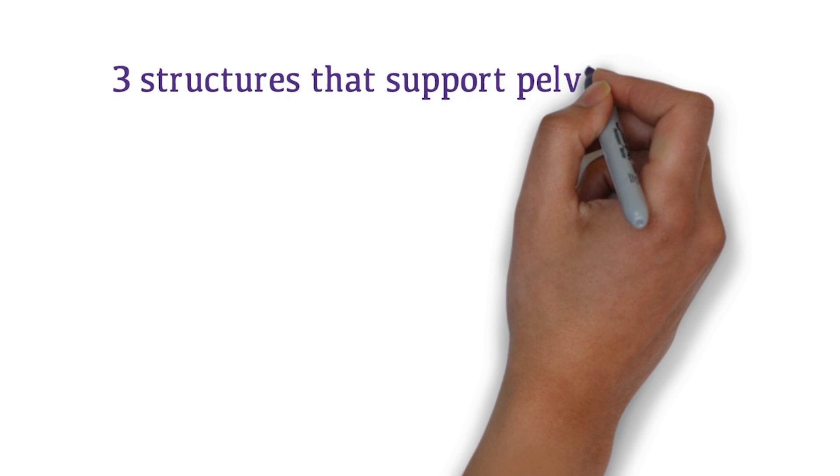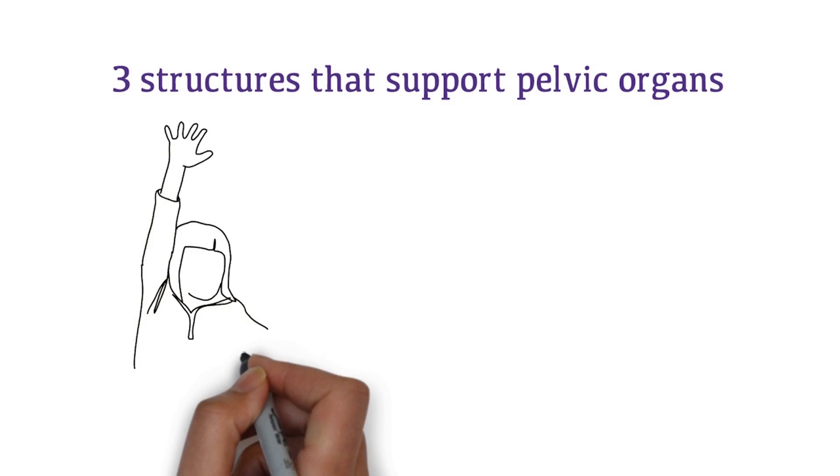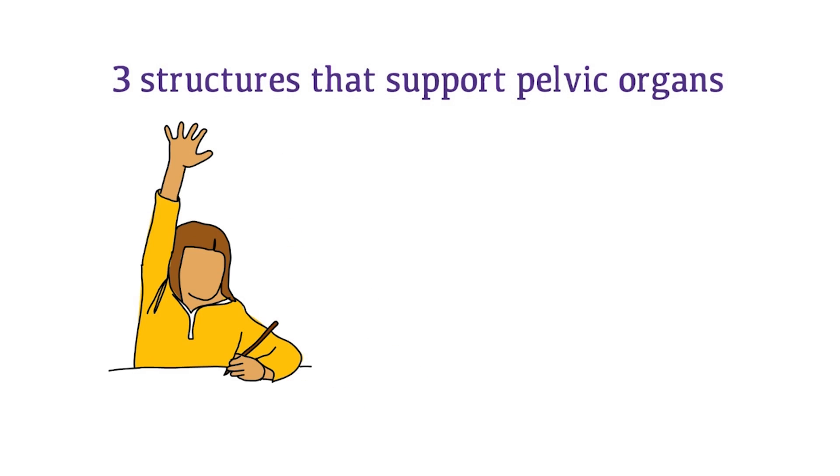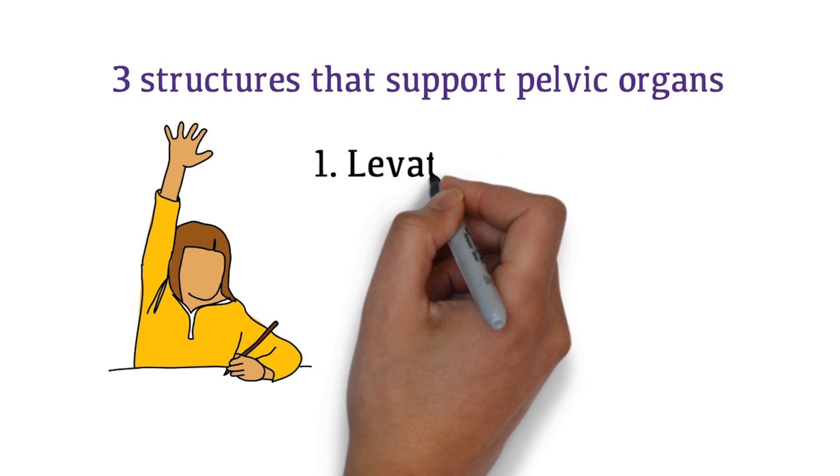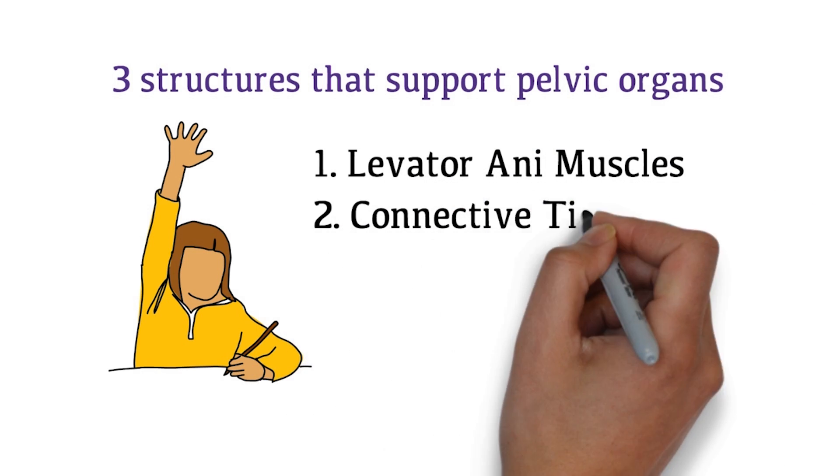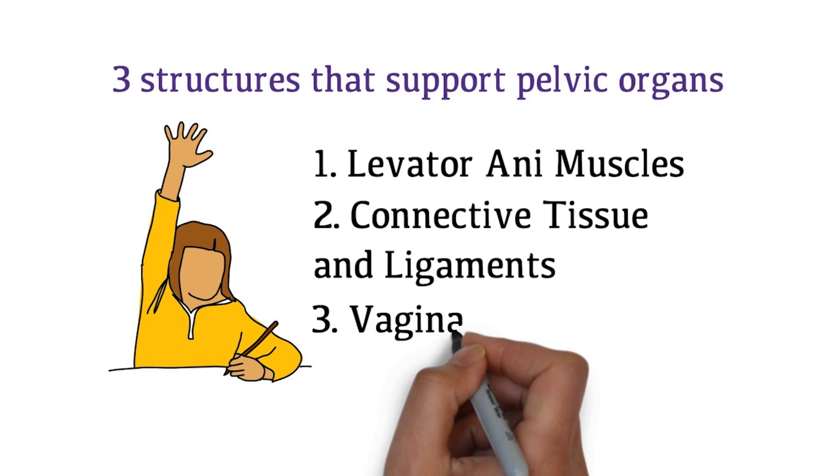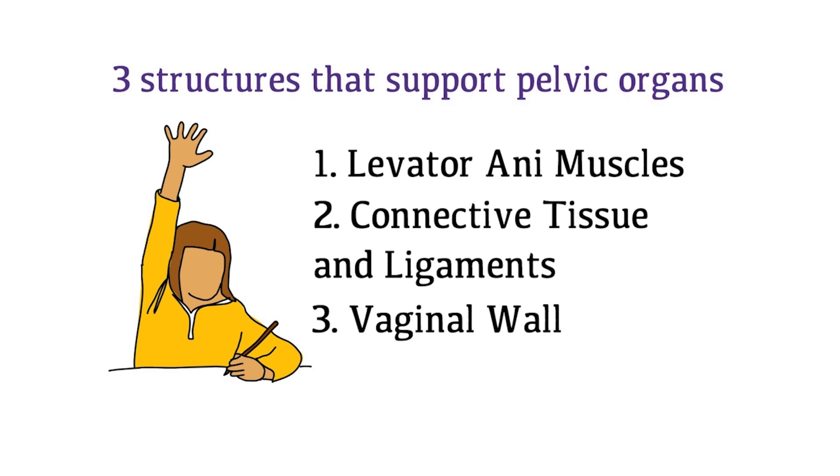Can you name the three structures that support pelvic organs? Pelvic floor muscles, also known as levator ani muscles. Pelvic floor connective tissue and ligaments, and vaginal wall. These three structures support the pelvic organs.